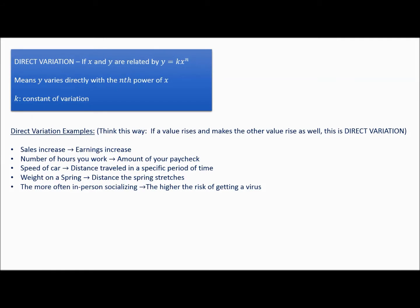In this video I would like to talk about variation. There are two types of variation: direct variation and inverse variation. Direct variation means if you have two values that are related, like sales and earnings, the more you sell the more you earn. If one value goes up, the other goes up as well. If your sales go down, your earnings go down — they go in the same direction.